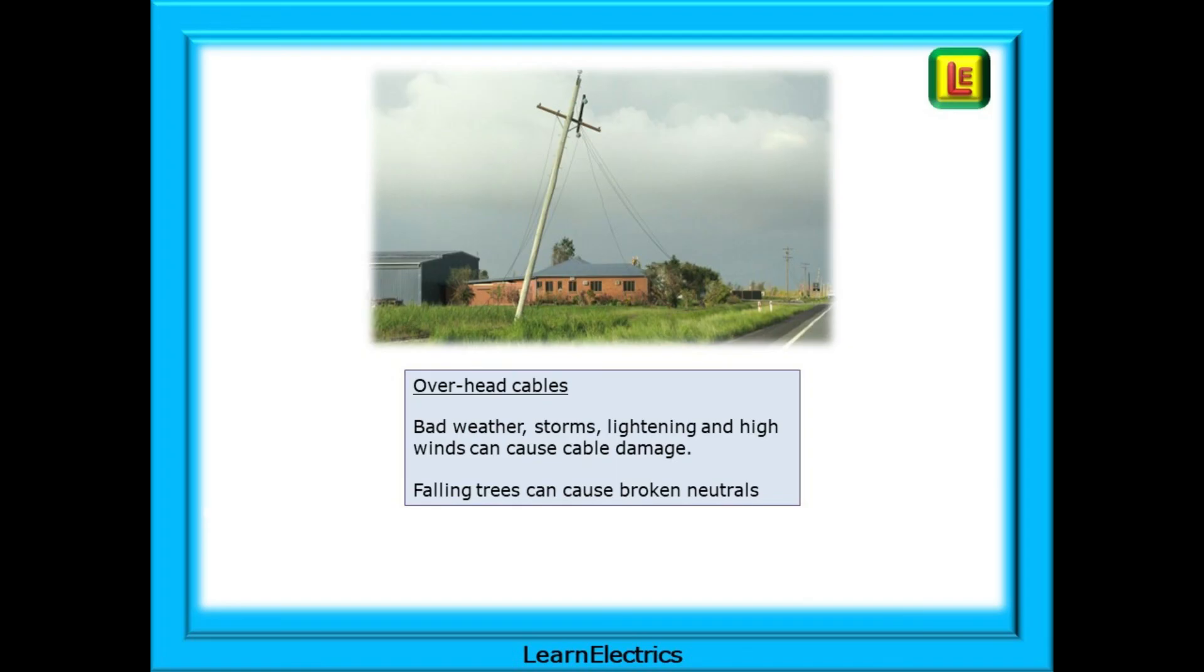Overhead cables can be a problem. Bad weather, storms, lightning and high winds can cause cable damage. Falling trees can cause broken neutrals and so on. I speak from personal experience on this one. The supply to my mother's house was damaged by high winds out in the Welsh mountains. The neutral connection was lost and every piece of electrical equipment in the house had to be replaced by the supply company. The fridge, the washing machine, the televisions and DVD players. The list went on and on. Everything.